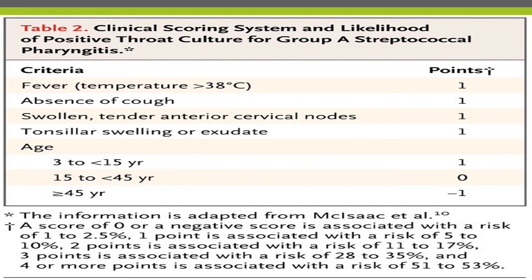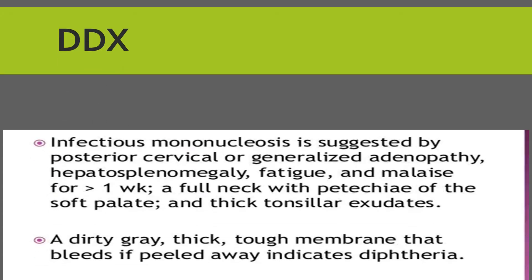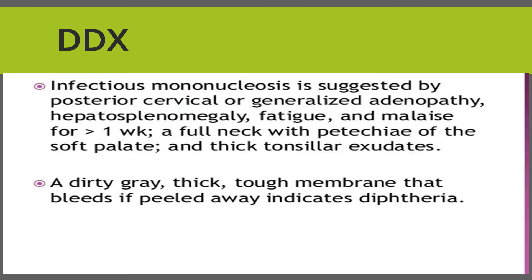Regarding differential diagnosis, infectious mononucleosis is one consideration — suggested by posterior cervical or generalized adenopathy, hepatosplenomegaly, fatigue, and malaise present for more than one week, along with a full neck, petechiae of the soft palate, and thick tonsillar exudates. Another differential is diphtheria, in which there is a dirty gray, thick, tough membrane or pseudomembrane that bleeds if peeled away, and the child is most often unimmunized.